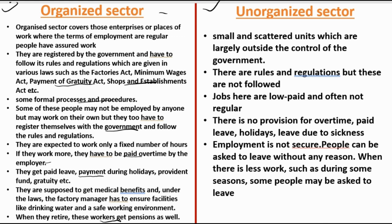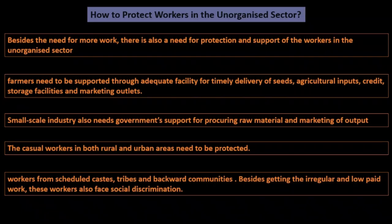Factory managers must ensure facilities like drinking water and a safe, clean environment. Government employees receive pensions on retirement; private sector workers receive a lump sum at the end of service. In the unorganized sector, there are small and scattered units largely outside government control — rules exist but are not followed. Jobs are low-paid and irregular, with no overtime pay, no paid leave or holidays, and employment is not secure — people can be asked to leave without reason.